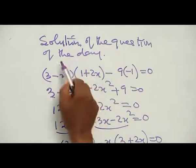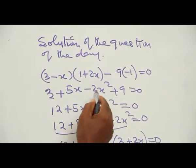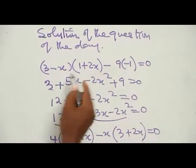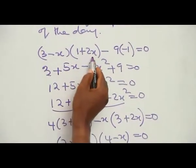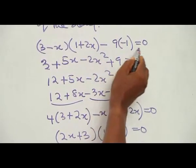Here is the solution of the question of the day. As we said, you cross multiply the main diagonal and the other diagonal. If you multiply (3 - s) by (1 + 2s) equal to -9 times -1 equal to 0.